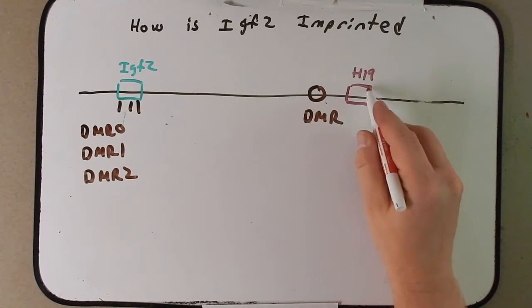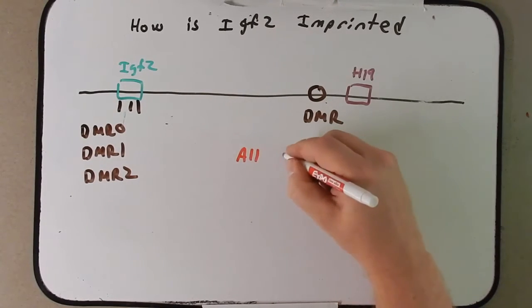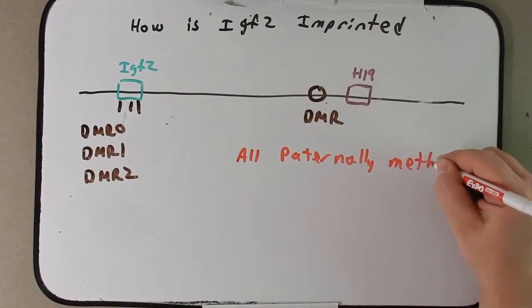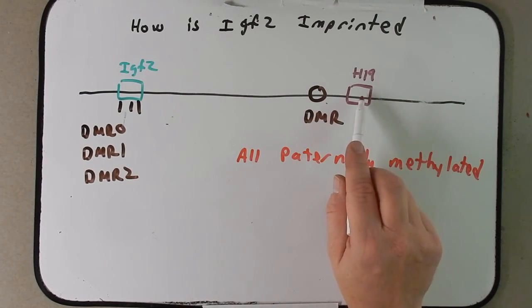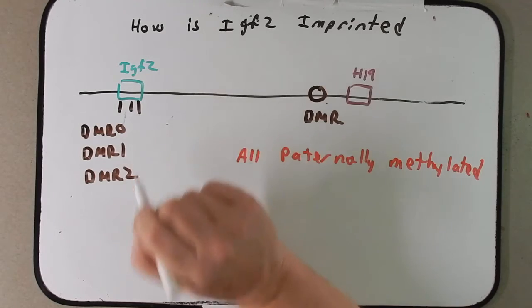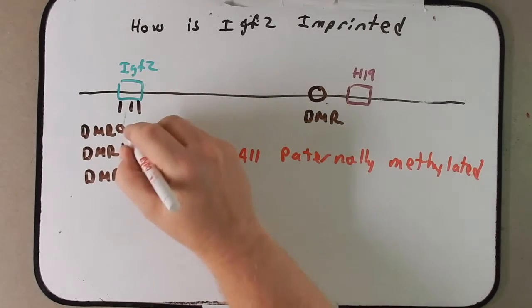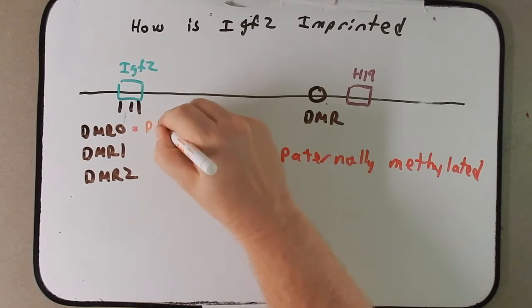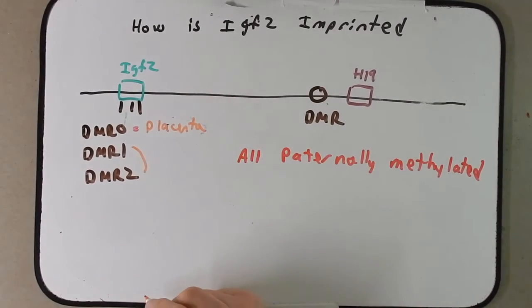These we're going to call, in order, DMR0, DMR1, DMR2. In all cases, DMR of H19 and these three found in IGF2, they're all paternally methylated. DMR is methylated to keep H19 off, which then allows IGF2 to be expressed. These DMR regions in IGF2 are a little different.